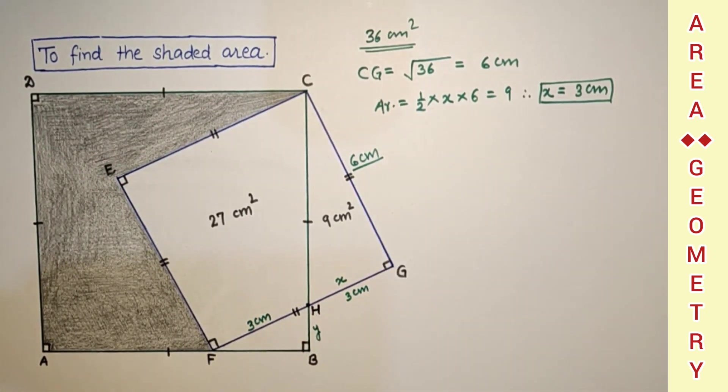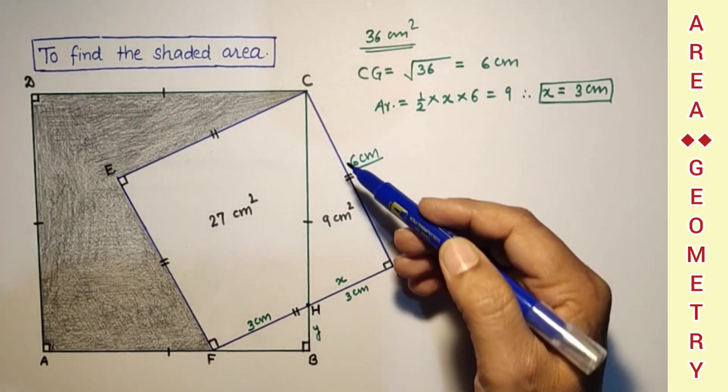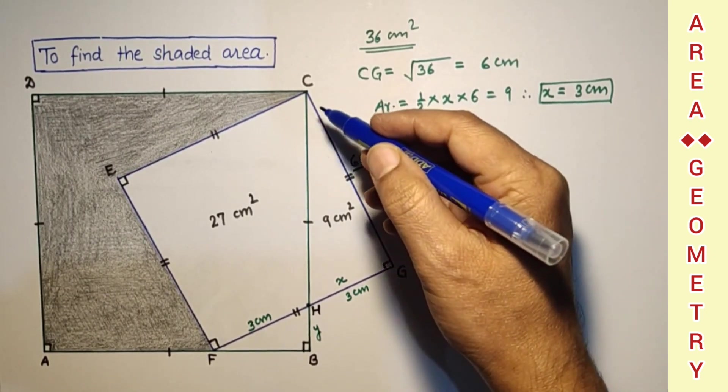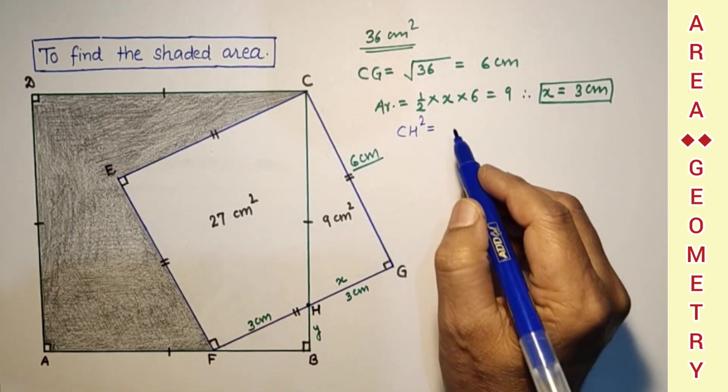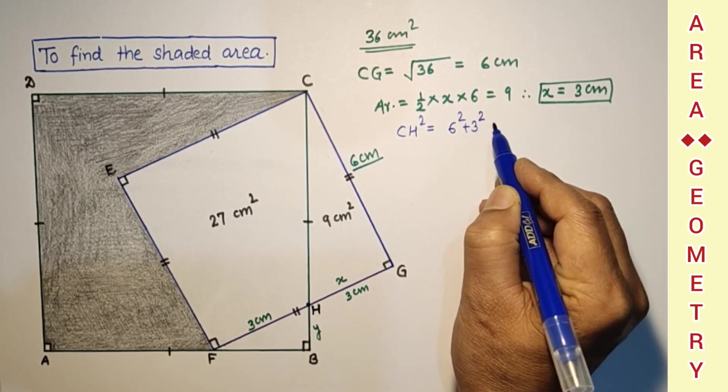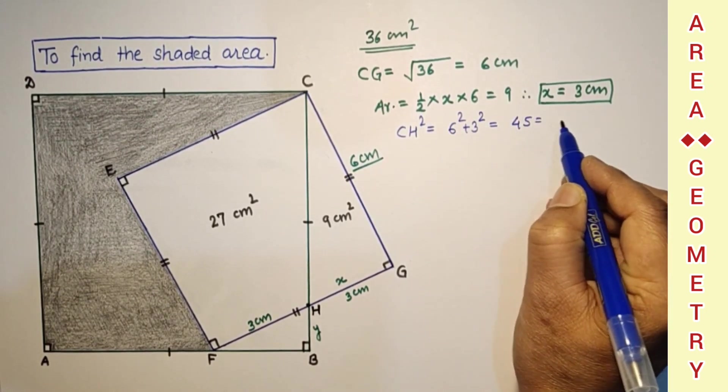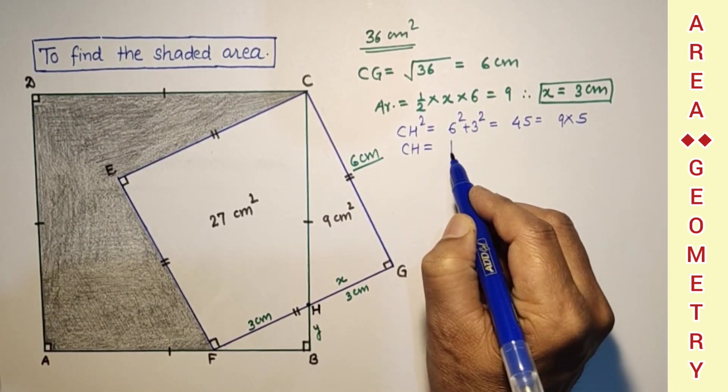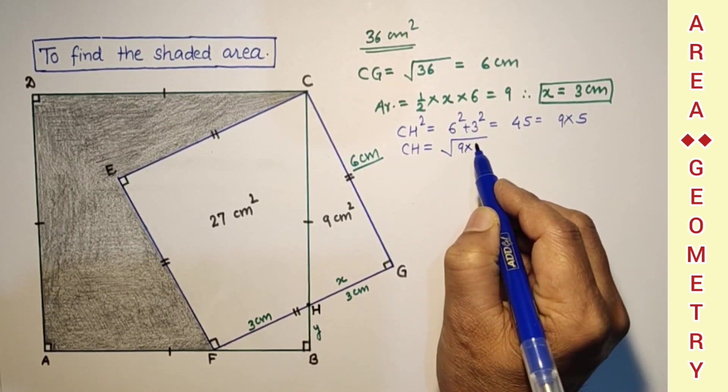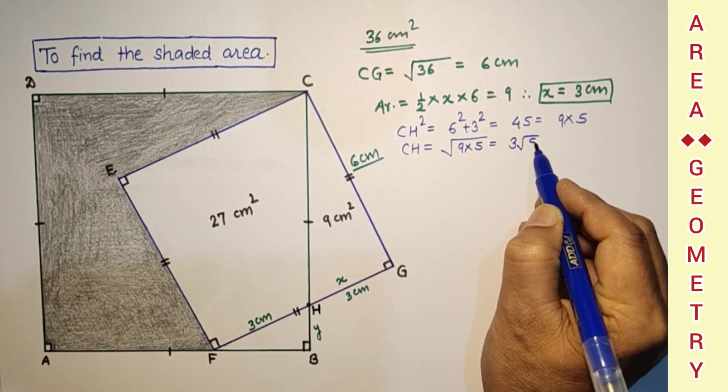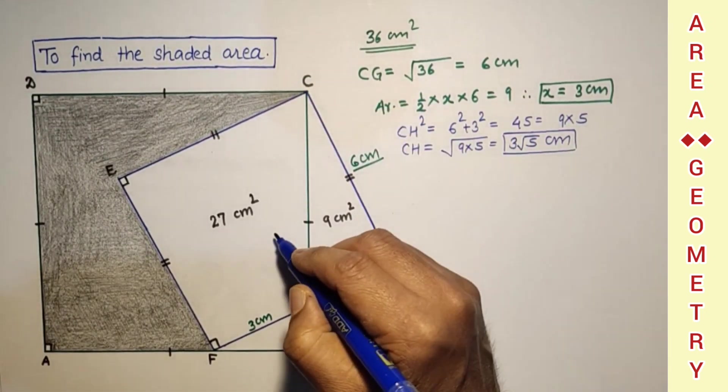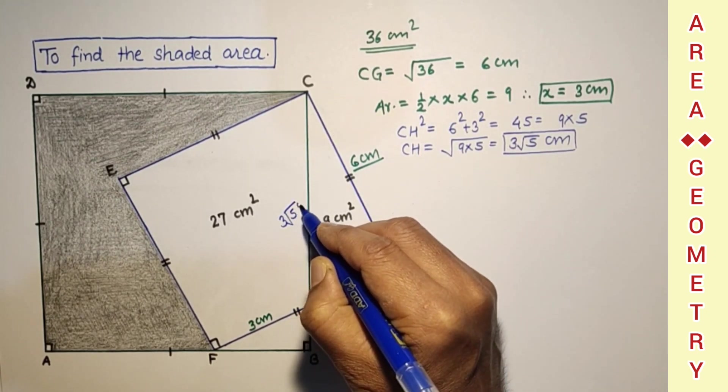After getting these two sides, we can use Pythagoras theorem to get this CH part. And that CH square is equal to sum of the squares of these two sides, that is 6 square plus 3 square. 36 plus 9 is 45, which is 9 into 5. So only CH we found square root of 9 into 5, which is 3 root 5 cm. This is what, 3 root 5 cm.